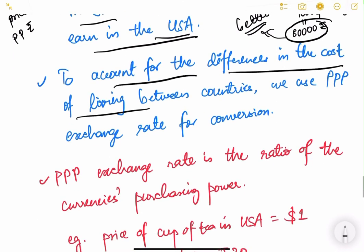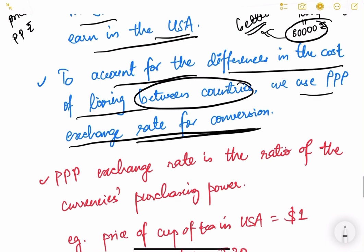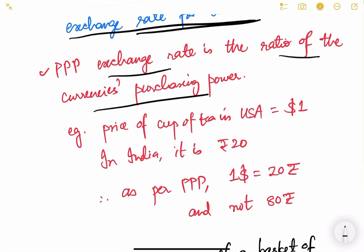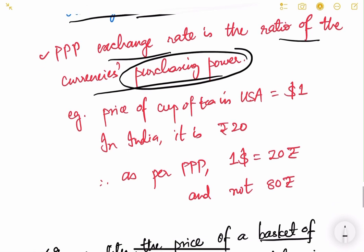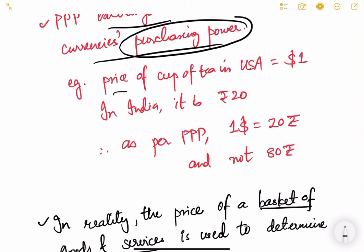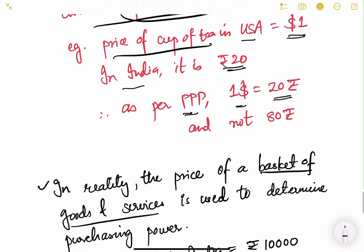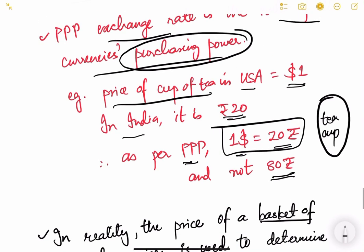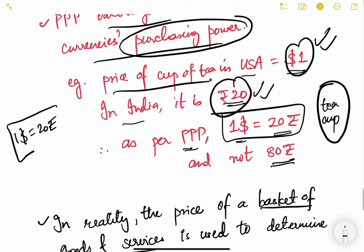To account for these differences in cost of living between countries, we use the PPP exchange rate for conversion. The PPP exchange rate is the ratio of currencies' purchasing power. In our example, a cup of tea costs $1 in the USA and ₹20 in India, so the PPP exchange rate implies $1 = ₹20 — not ₹80 as the market rate suggests.